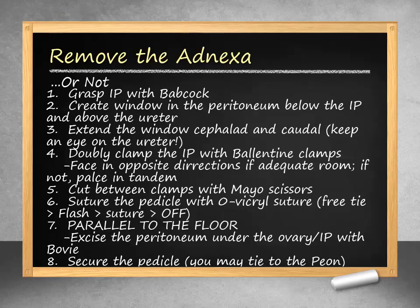Next, we will remove the adnexa. If you are not removing the adnexa, this step may be omitted and the adnexa removed at the level of the cornua from the uterus. To remove the adnexa, first grasp the IP ligament with a Babcock clamp and gently elevate. Next, create a window with bovie electrosurgery in the peritoneum below the IP but above the ureter — you have already identified these structures. The incision is then extended cephalad and caudal parallel to the IP.